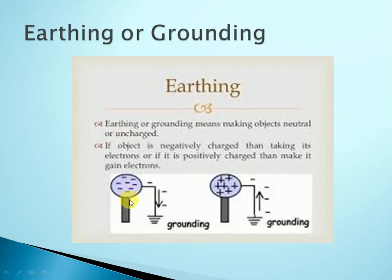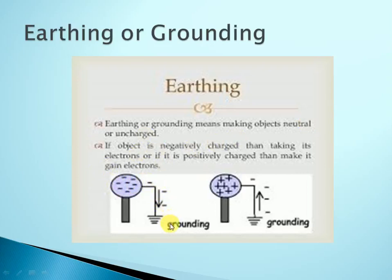Looking at the diagram: here is an object mounted on an insulator stand and it is negatively charged — that is, it has excess negative charge, and in this object there are positive charges. Grounding or earthing means making the object neutral or uncharged. If the object is negatively charged, it takes electrons to the earth. And if it is positively charged, there is a movement of electrons from earth to the object.